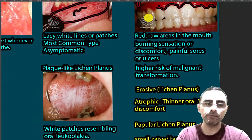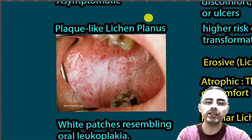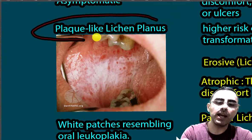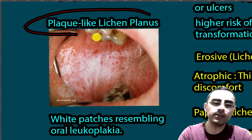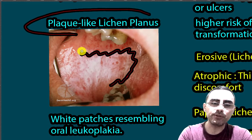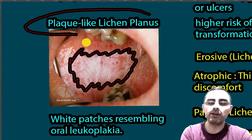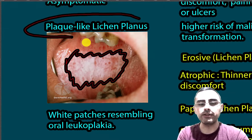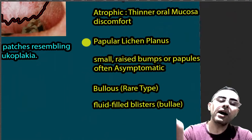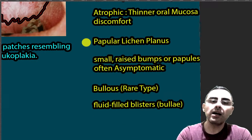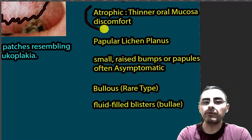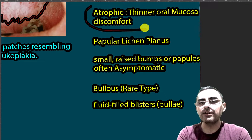Another type is plaque-like lichen planus. It is characterized by a white patch resembling oral leukoplakia. This type is usually asymptomatic.